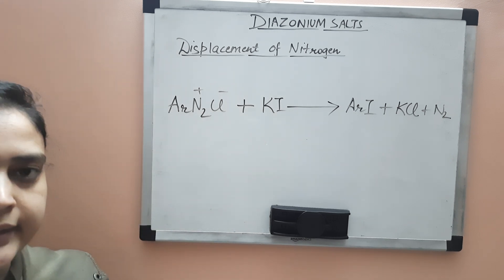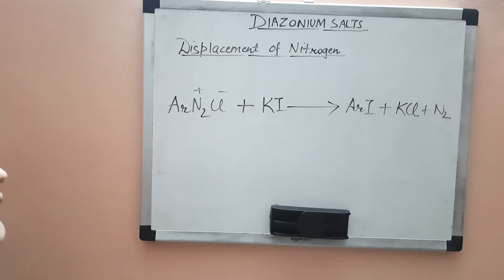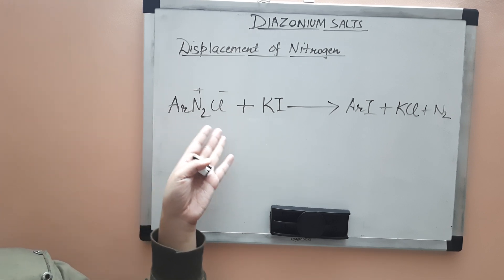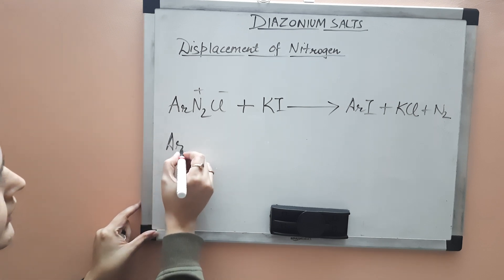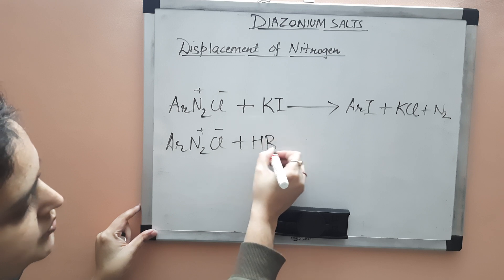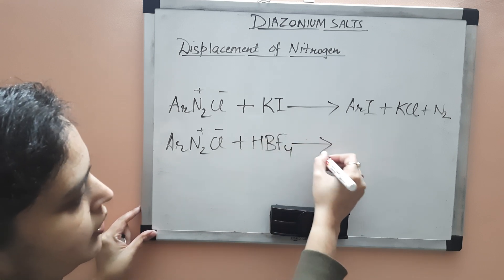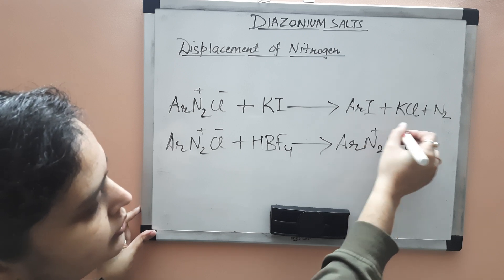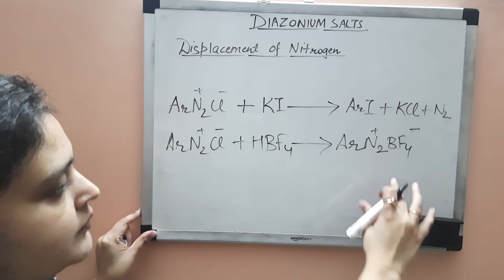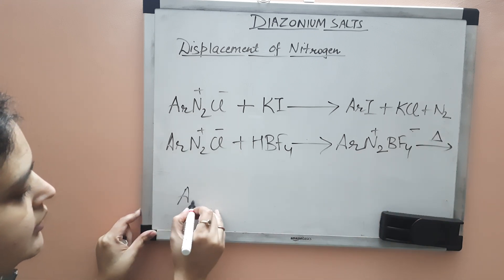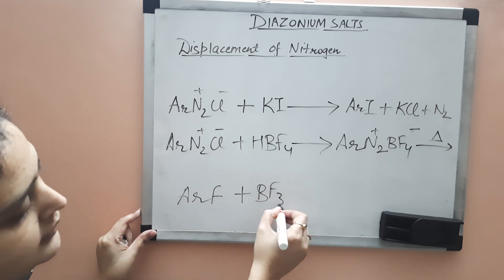That was the introduction of iodide in the ring. Now, how will you introduce fluoride into the diazonium salt? For introducing fluoride, you treat your diazonium salt solution with fluoroboric acid, HBF4. You will get aryl diazonium borofluorate as a precipitate. When this is heated, it decomposes to your aryl fluoride, BF3, and nitrogen gas.